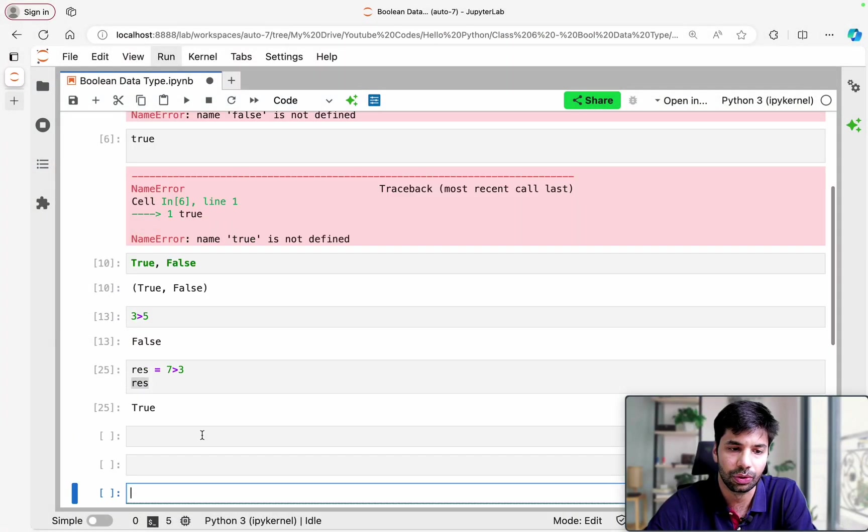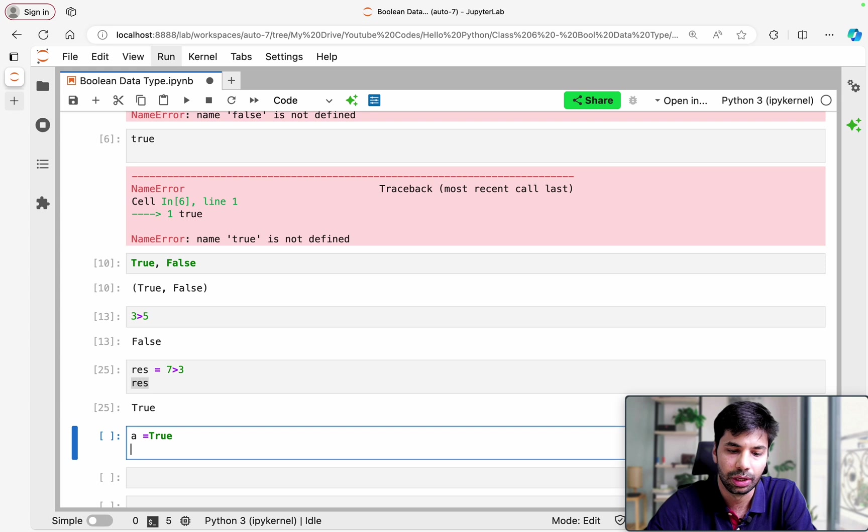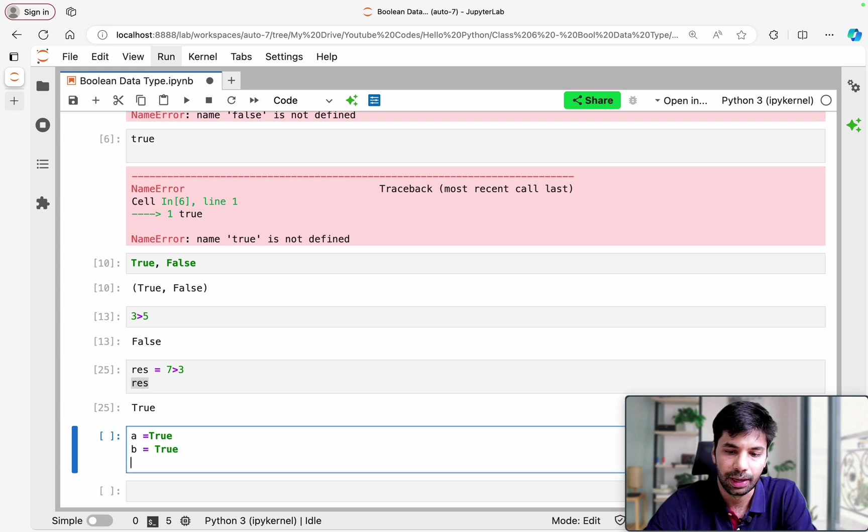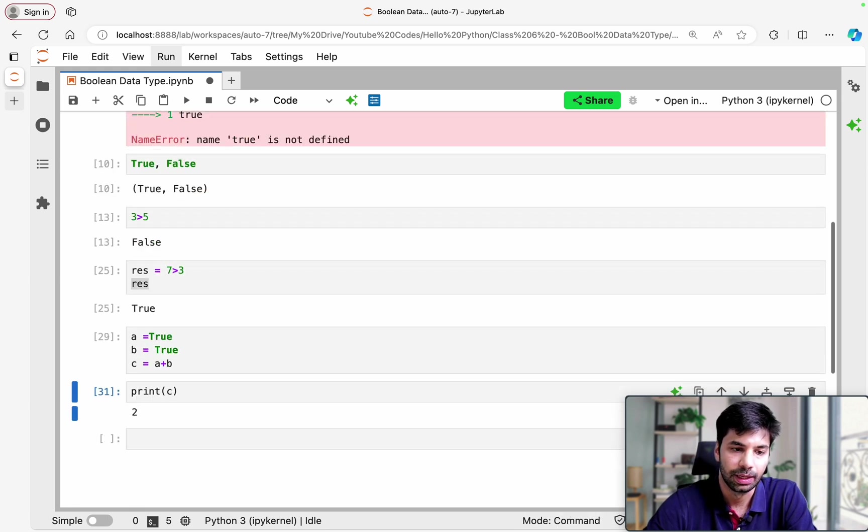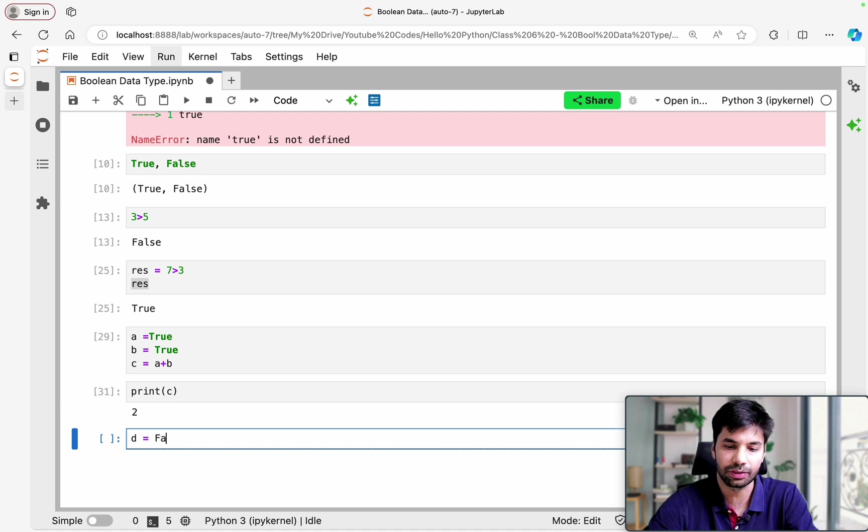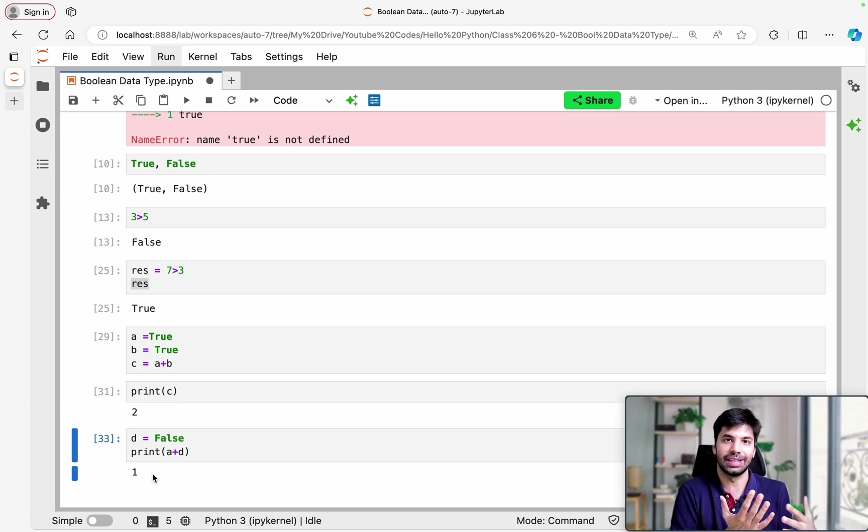So let's say if I have A equals true, then B equals true. And then let's say if I have C equals A plus B, and let me now try to print C. The answer is coming out to be two. Now again, let me just do one more thing. D equals false and print A plus D. And now you're seeing the answer as one.